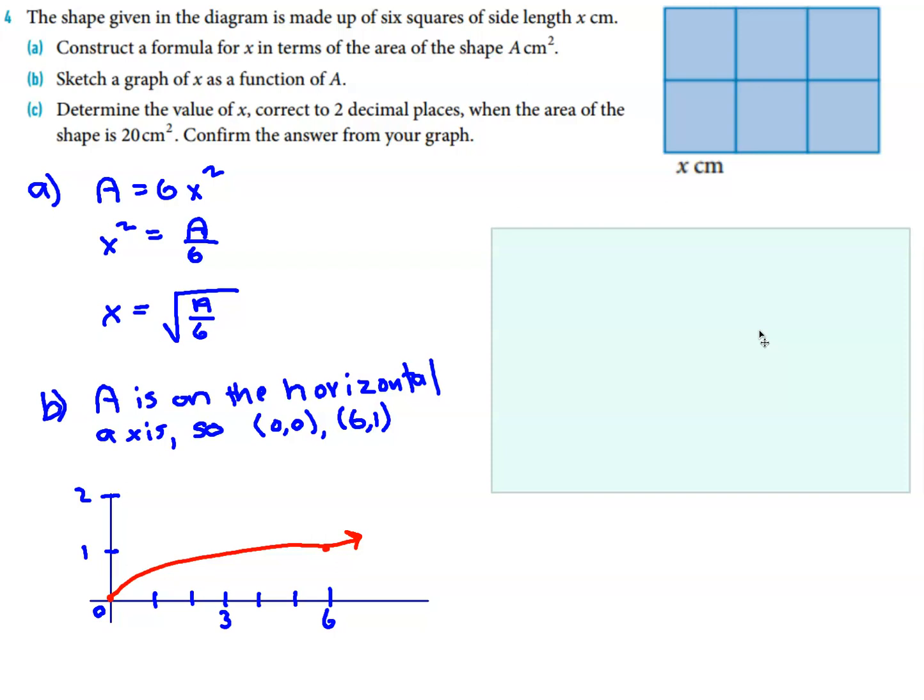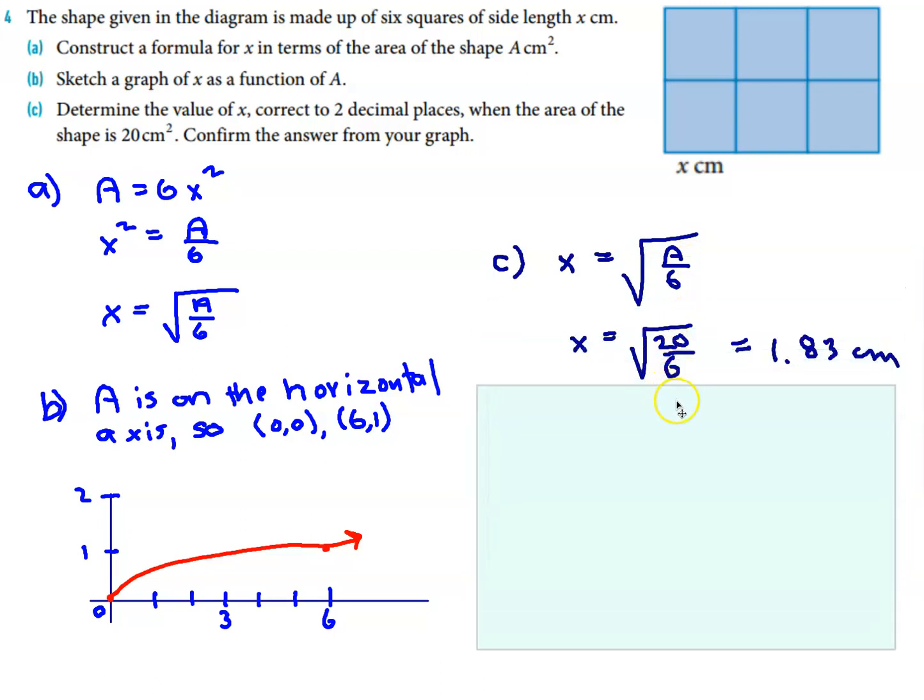Okay, part C: determine the value of x correct to two decimal places when the area of the shape is 20 square centimeters. Well, this one, if you've tried it, hopefully you didn't find it too difficult.